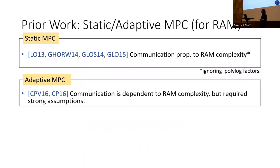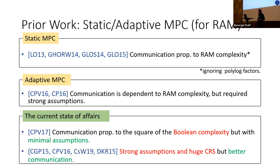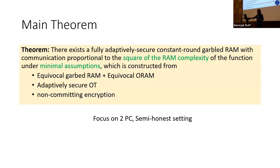Looking at prior work for RAM programs in the static setting, a line of works improves communication to just polylog(t) overhead. The last work in this line is fully black-box in its underlying primitives. In the adaptive setting, there are works dependent on RAM complexity but using CRS and IO-based assumptions. The current state of affairs is either strong assumptions or communication dependent on Boolean circuit complexity. We construct an adaptively secure protocol with communication proportional to the square of the RAM complexity, under minimal assumptions.